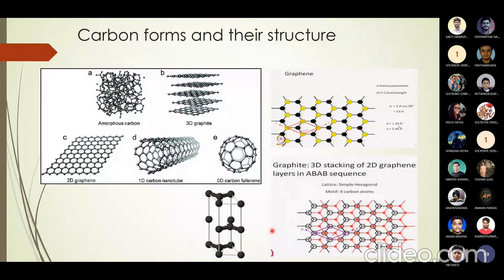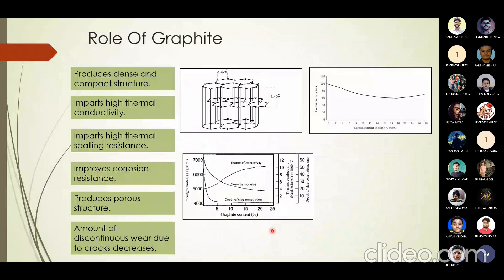Moving to the role of graphite in refractories: the form of carbon included in refractory is flaky graphite. Not all refractories contain carbon — there are various types, and some are carbon-bearing, like magnesia-carbon refractory and aluminium-magnesia-carbon (AMC) refractory. Flaky graphite is graphite with a flaky morphology — pointed flakes. The raw materials for a magnesia-carbon refractory are magnesia, flaky graphite, resins, and antioxidants. When flaky graphite is added during solid-state mixing, it fills the pores between magnesia particles, making the structure dense and compact.